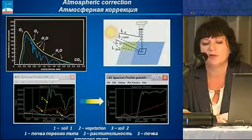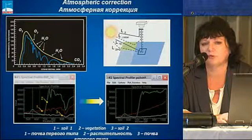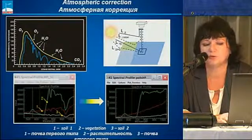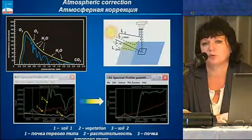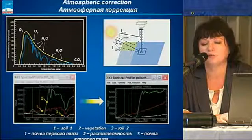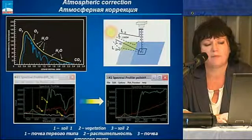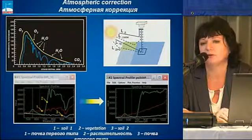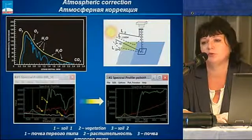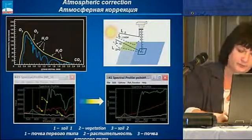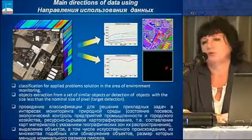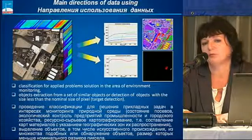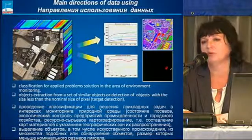On this slide you can see spectral characteristics of several types of materials before and after atmospheric correction. We can see a reduction of signal in the blue segment, which is the most dispersion-prone, and also there is no absorption fall at the 940 nanometer point where water vapors are absorbed.